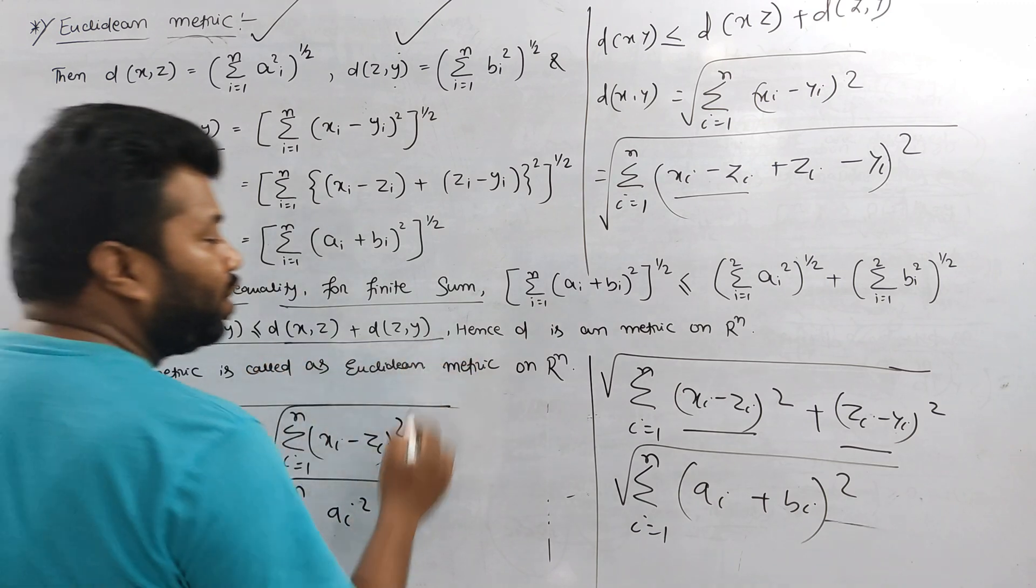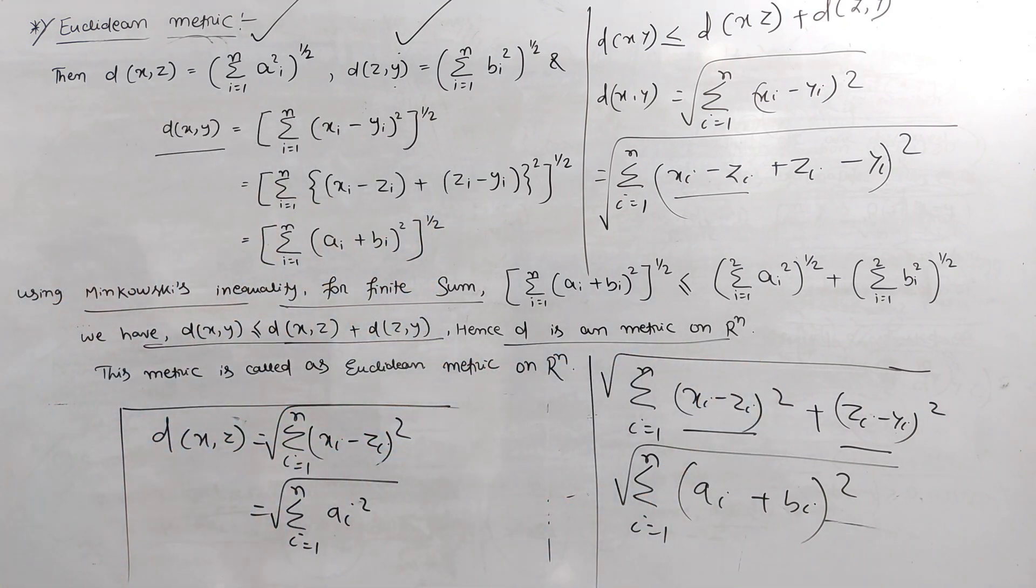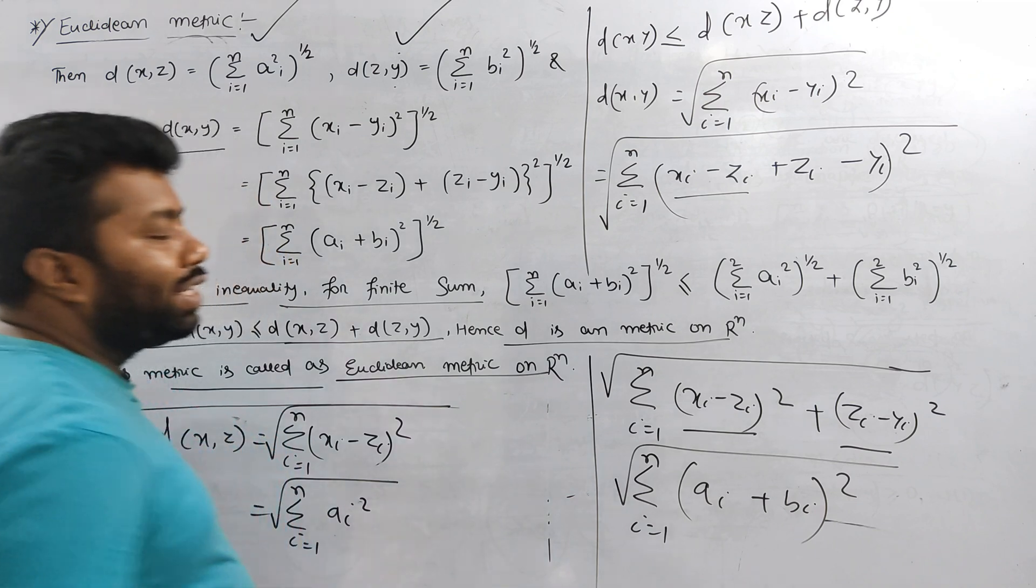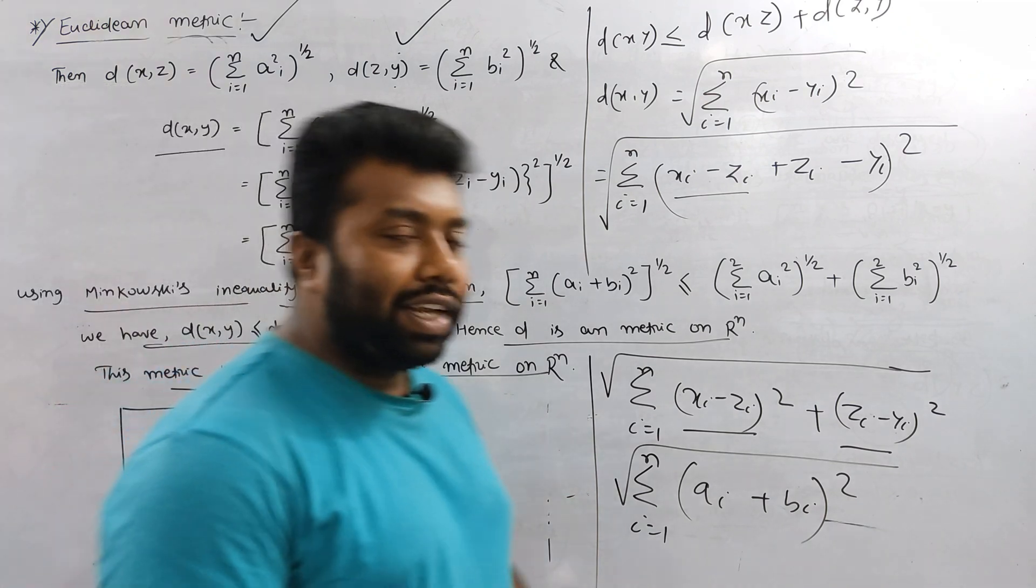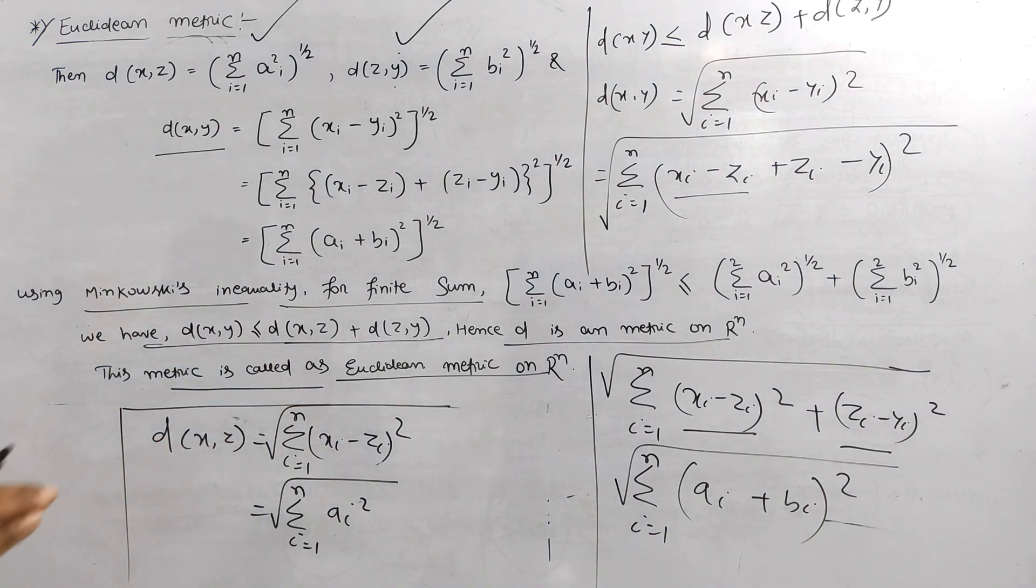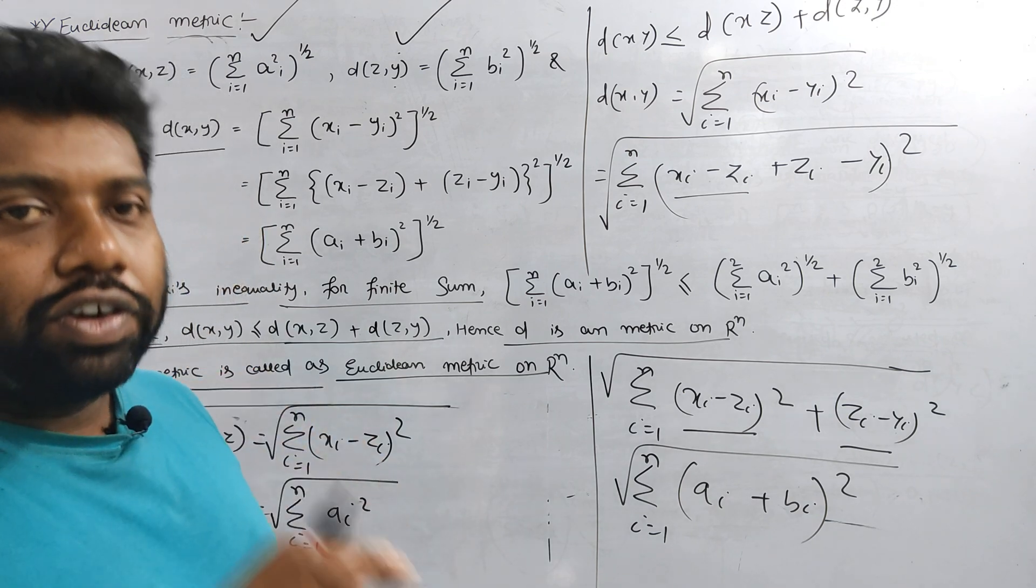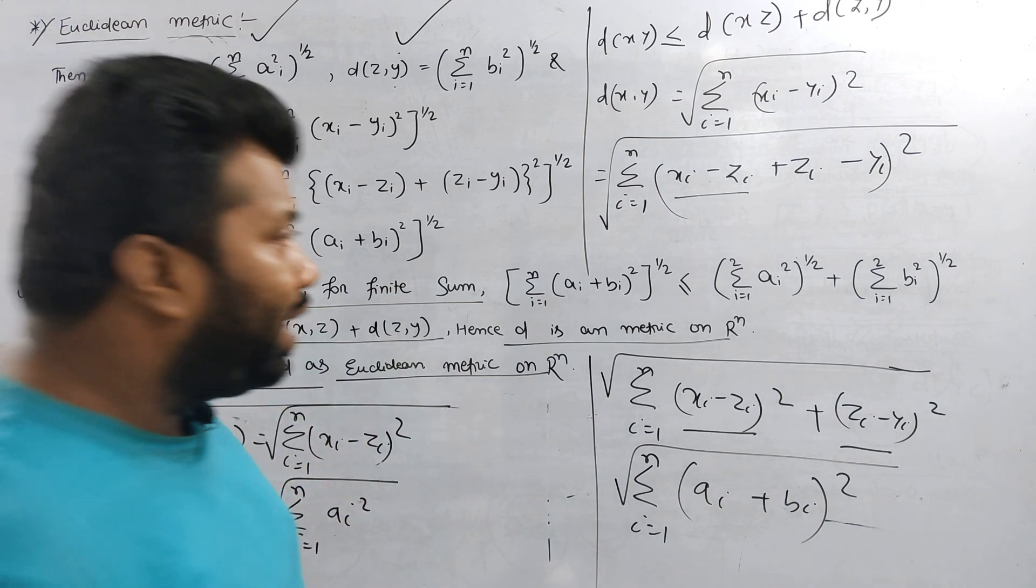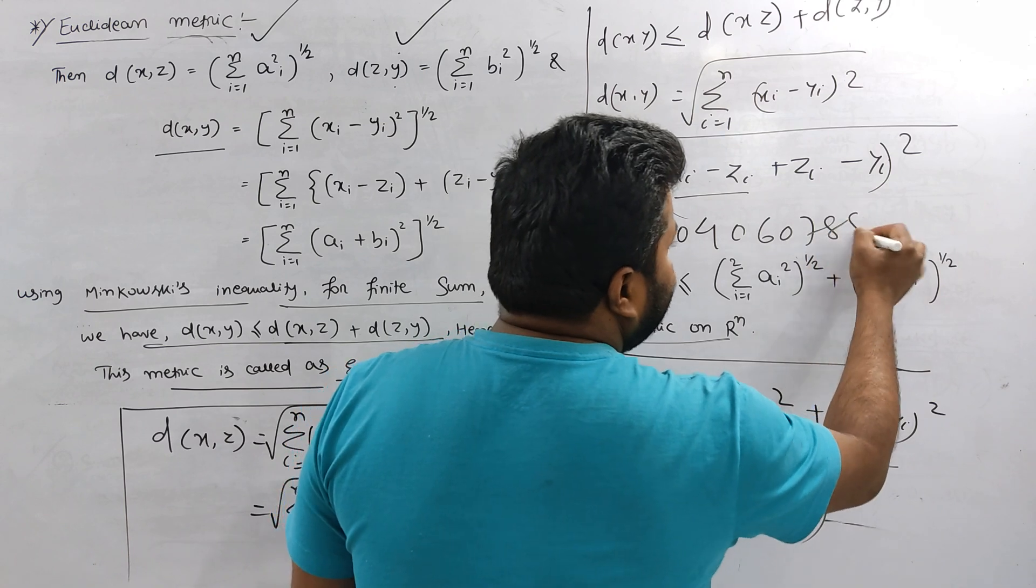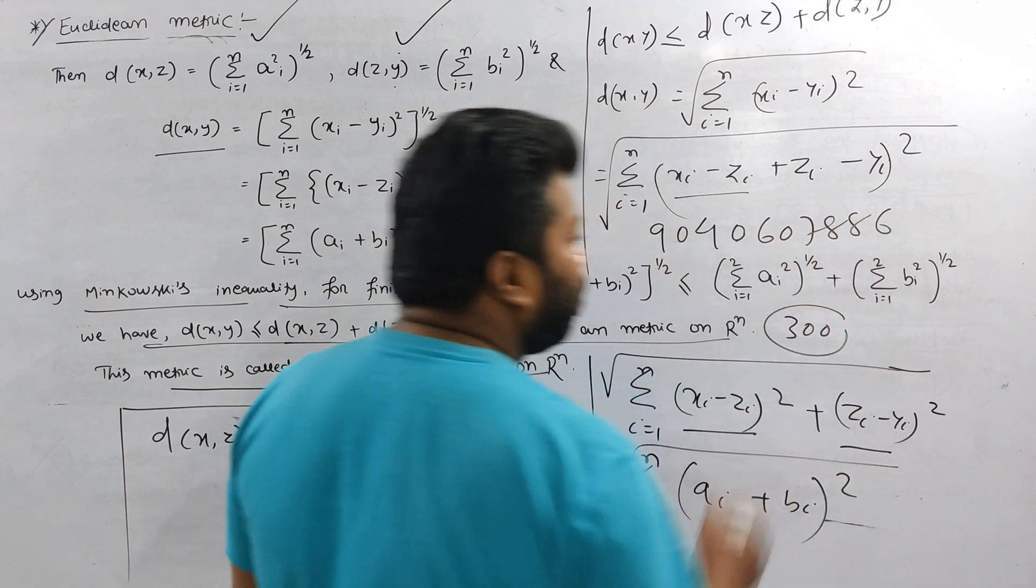Since d is the matrix space, thus the matrix is called Euclidean matrix. I hope you can understand. For the third semester complete or fourth semester math or physics complete classes start, contact 9040607886 for only 300 rupees for the classes provided.